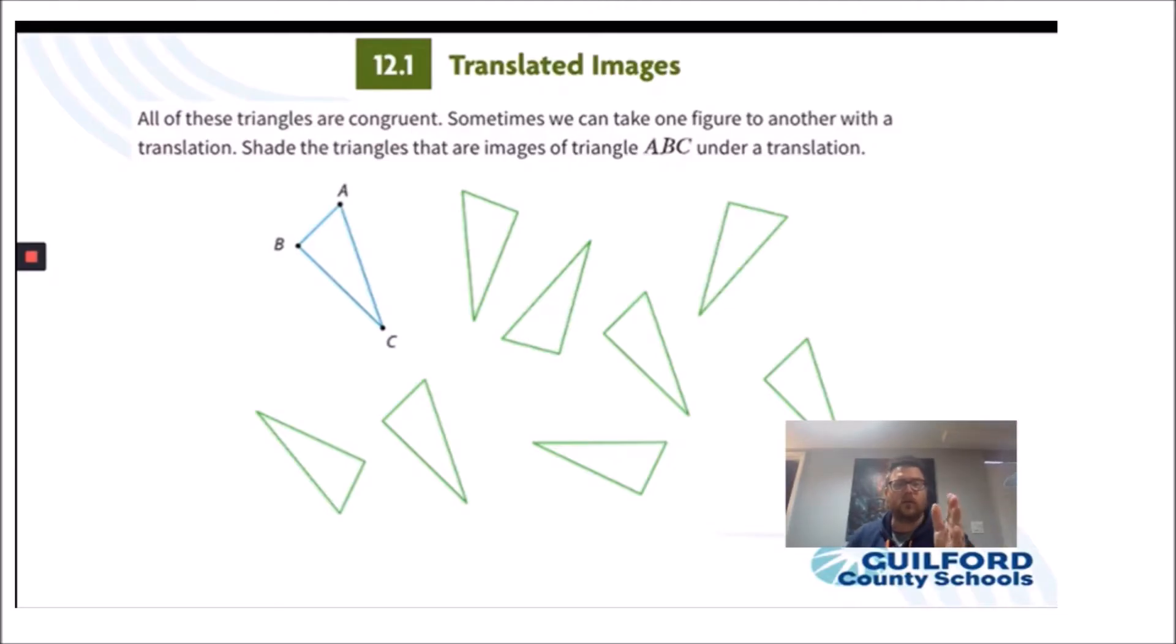First thing, let's talk about congruency. Mentioning that all of these triangles are congruent. We need to know that congruent means same angle measures and same side lengths in this case.